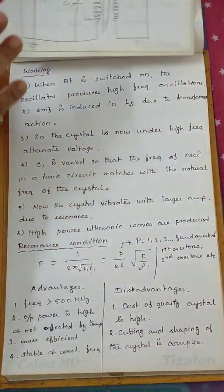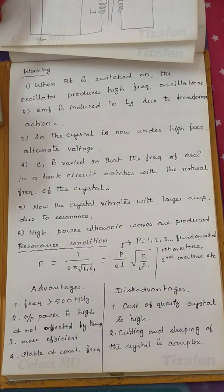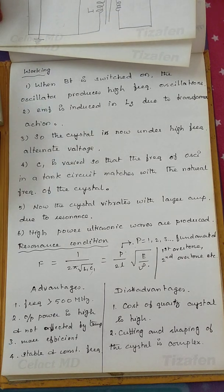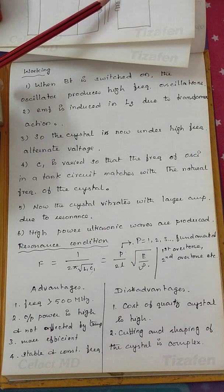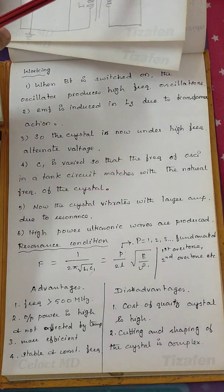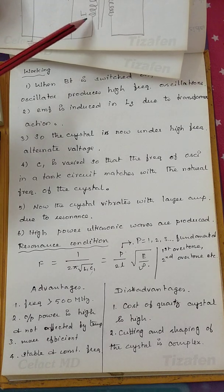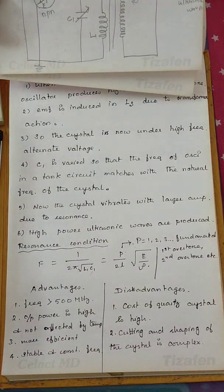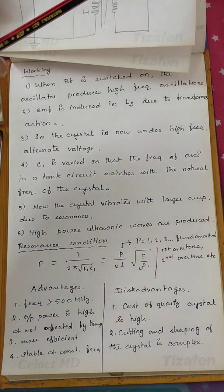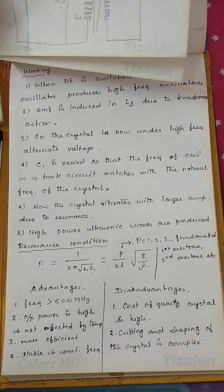When the battery is switched on, it is a high-tension battery. The oscillator produces high-frequency oscillations. Due to transformer action, an EMF is induced in coil L3. The crystal is then set into high-frequency alternating voltage. If C1 is varied so that the oscillation frequency of the tank circuit matches the natural frequency of the crystal, the crystal vibrates with larger amplitude.